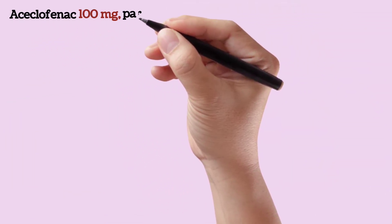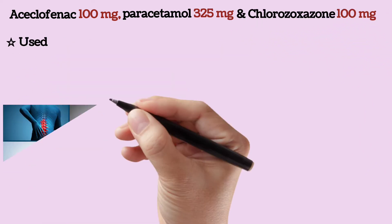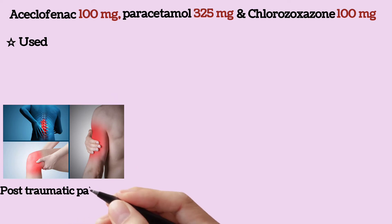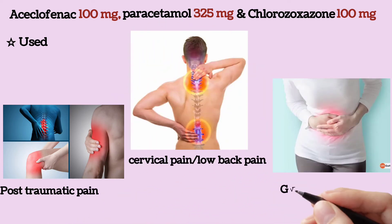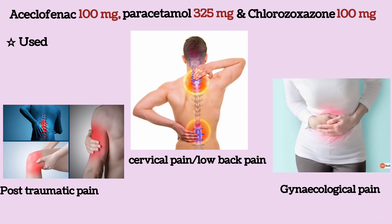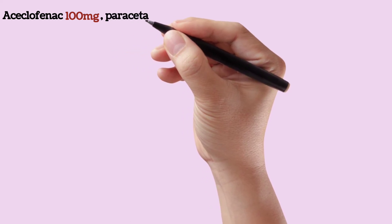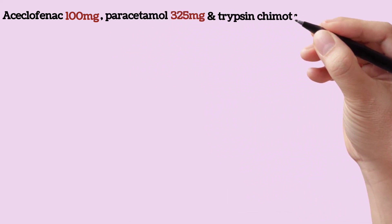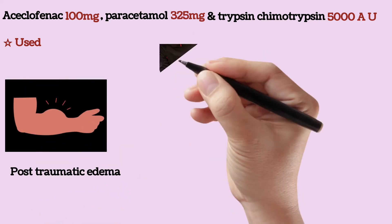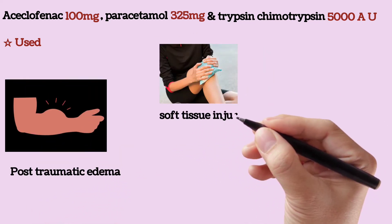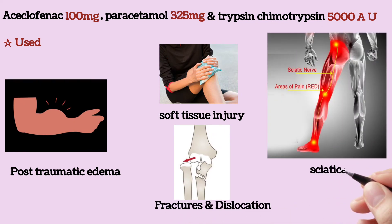Next is aceclofenac, paracetamol, and chlorzoxazone. This combination is used in patients with post-traumatic pain, cervical pain or low back pain, and gynecological pain. Next is aceclofenac, paracetamol, and trypsin-chymotrypsin, which is used for the treatment of post-traumatic edema, soft tissue injury, fractures and dislocation, and sciatica.